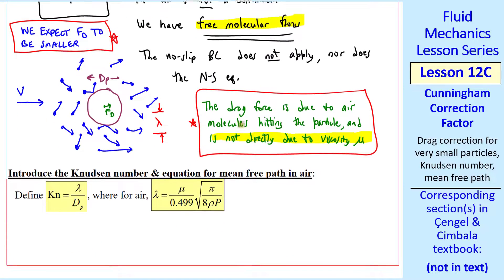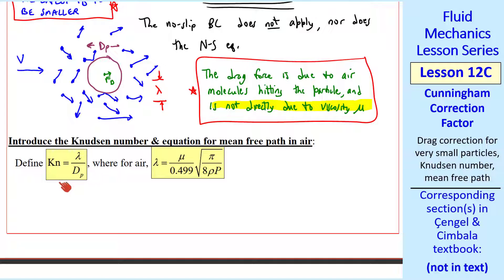This is where we introduce something called the Knudsen number, which we define here as the ratio of mean free path to particle diameter. The Knudsen number is a non-dimensional parameter just like Reynolds number. So it has dimensions of 1 and no units.